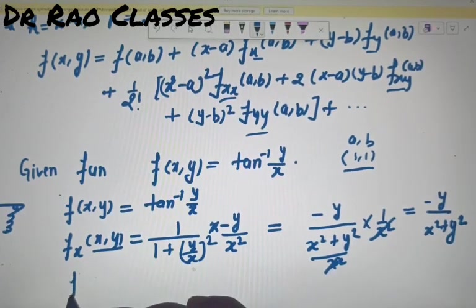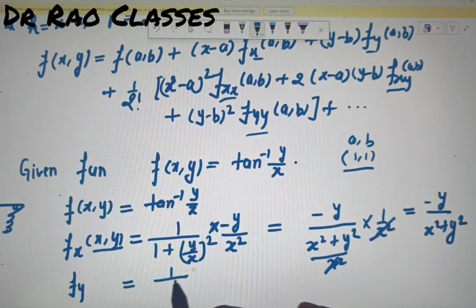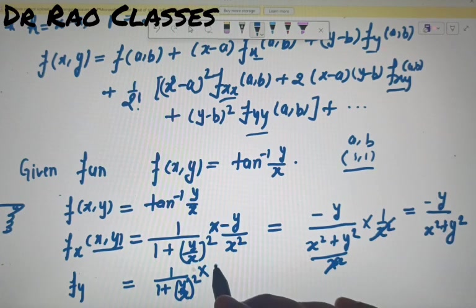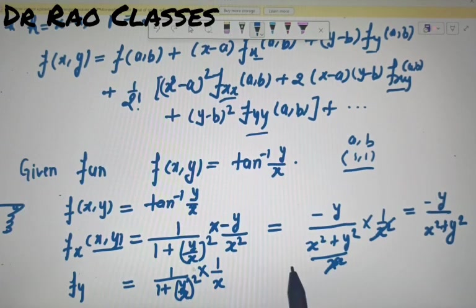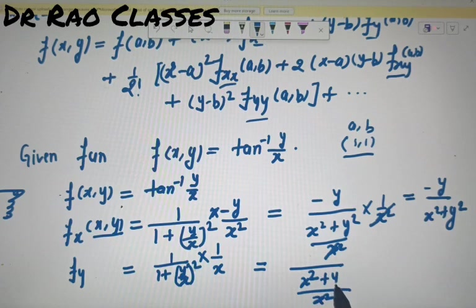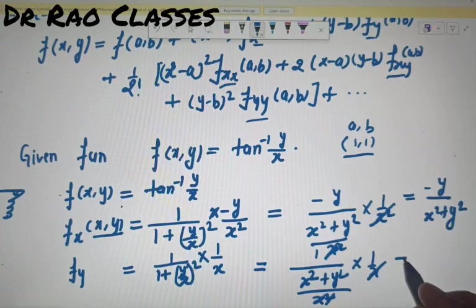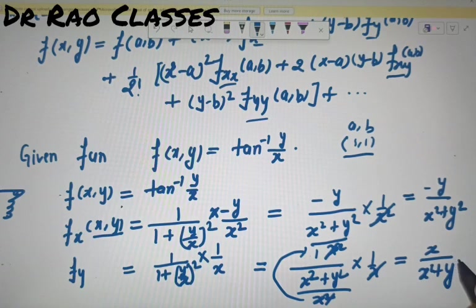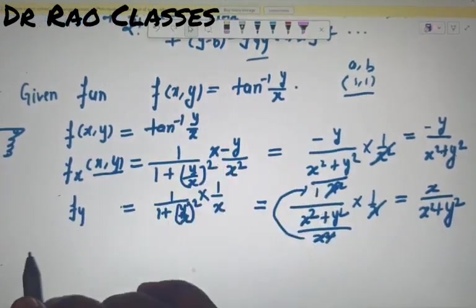f_y निकालते हैं: 1/(1+(y/x)²) times (1/x) — y के respect में (y/x) का derivative 1/x है। LCM लेने पर x² + y² नीचे आता है, और x ऊपर आता है। तो f_y = x/(x² + y²)।